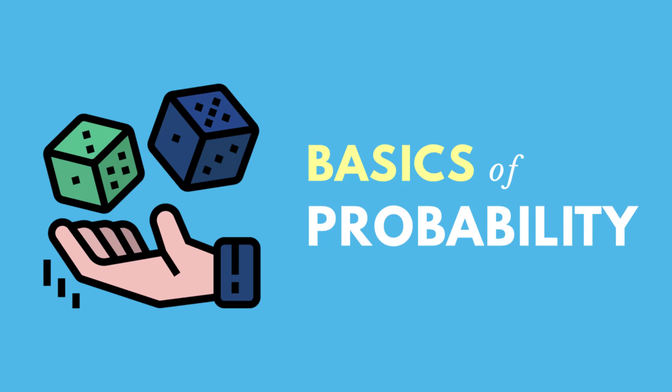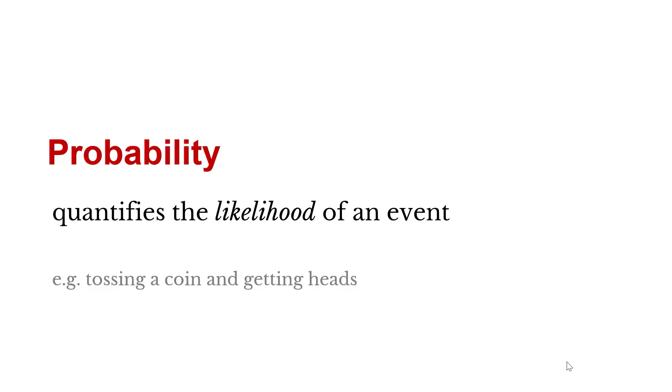Now we'll talk about some basics of probability. Probability quantifies the likelihood of an event. For example, tossing a coin and getting heads or tails, and rolling a dice and getting a three or a two. What's the likelihood of that event occurring?